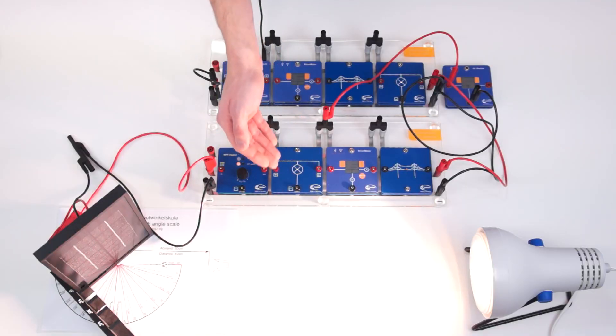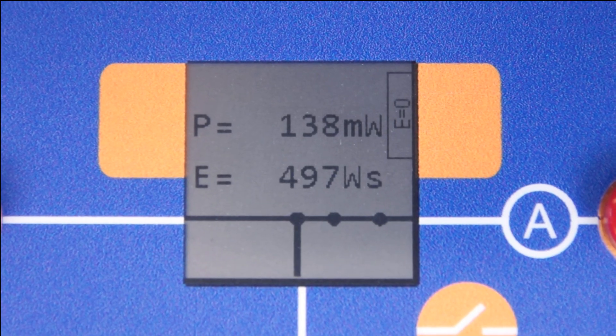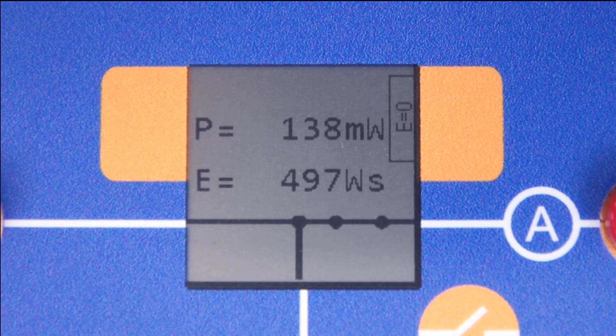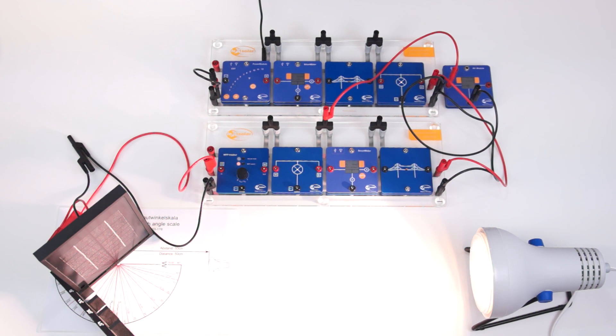This means that the second household is completely supplied and the first household is partially supplied by the photovoltaic system. In contrast, the power of the transformer is decreased. Here, a value of 138 milliwatts can be read. In reality, this means that the adjoining medium voltage grid releases less energy in the strand due to the higher photovoltaic power.